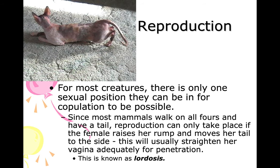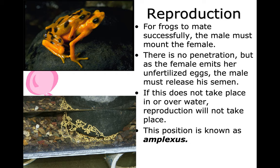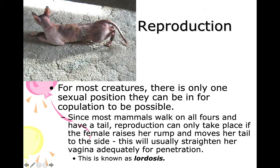For most creatures, there is only one sexual position possible for copulation. Since most mammals walk on all fours and have a tail, reproduction can only take place if the female raises her rump and moves her tail to the side — straightening her vagina adequately for penetration. This is known as lordosis. For frogs to mate successfully, the male mounts the female with no penetration; as the female emits unfertilized eggs, the male releases his sperm over water. This position is known as amplexus.